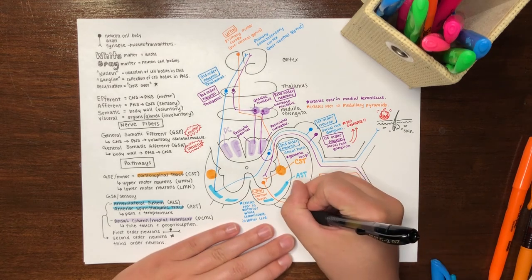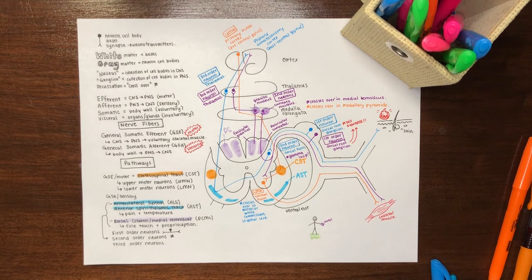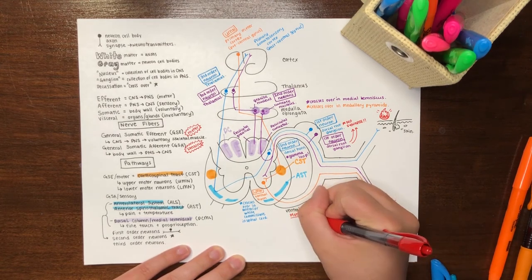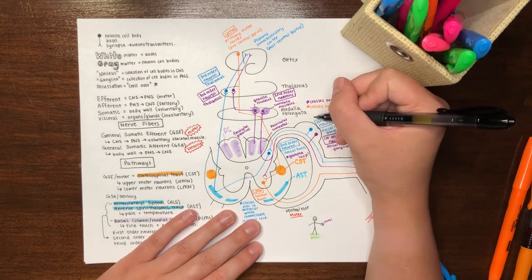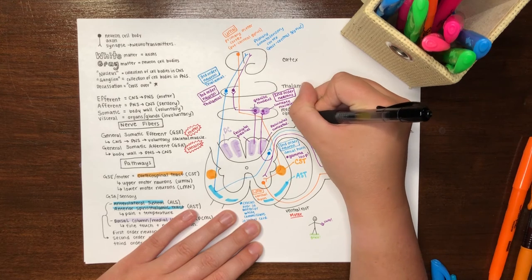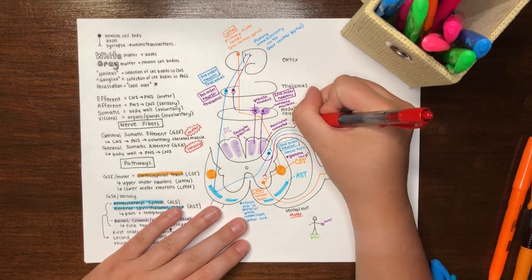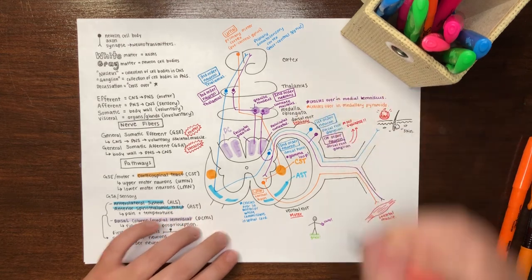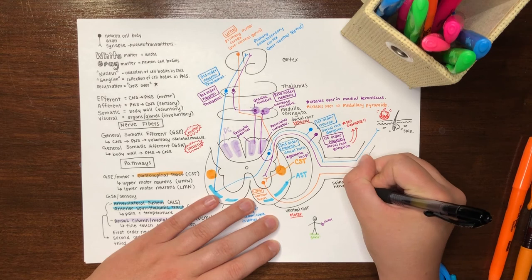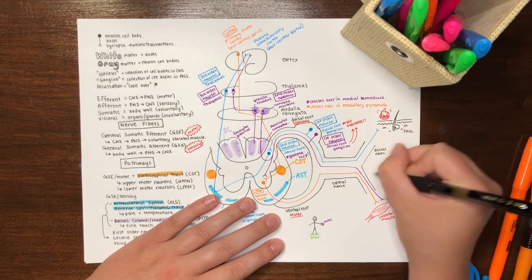Looking back at the spinal cord and spinal nerves, some helpful generalizations can be made. In general, the ventral root transmits primarily efferent motor information away from the central nervous system. Likewise, the dorsal root carries mostly afferent sensory information toward the central nervous system. However, the spinal nerve along with the dorsal and ventral rami contain both efferent and afferent fibers.